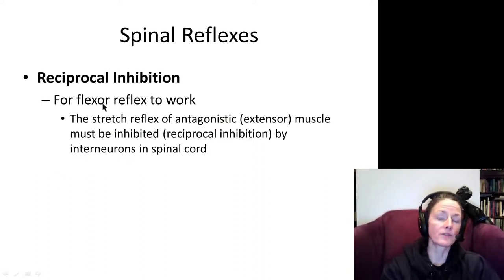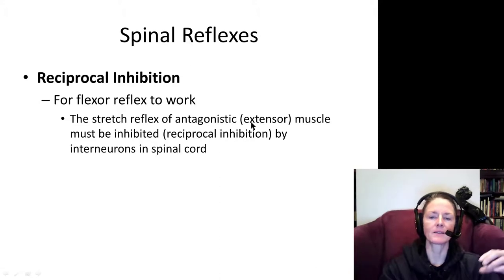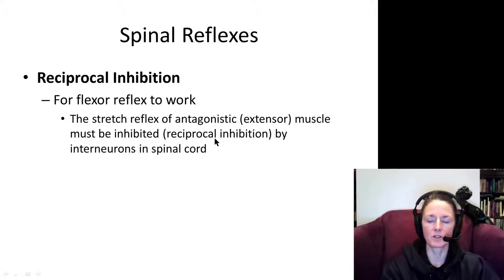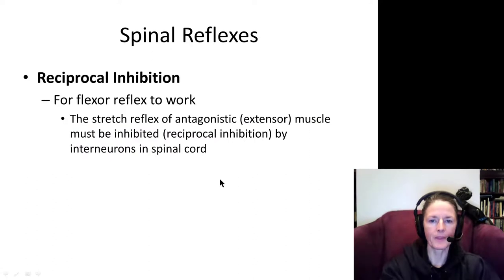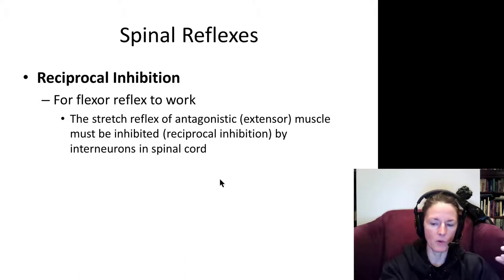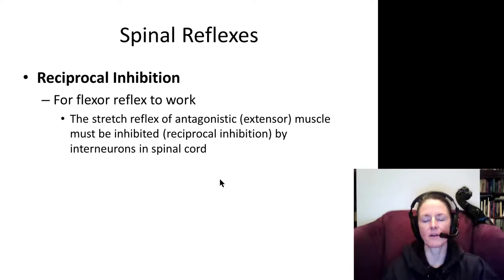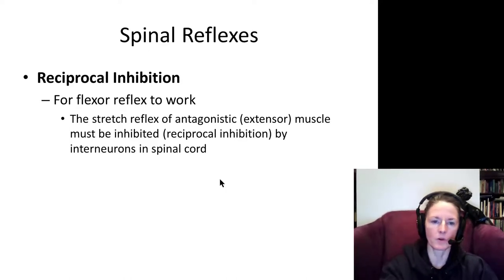For this reflex to work, we have to inhibit the antagonistic muscles. This is called reciprocal inhibition — we inhibit the extensors so that the flexors can work. This can be mediated by a few levels of the spinal cord.